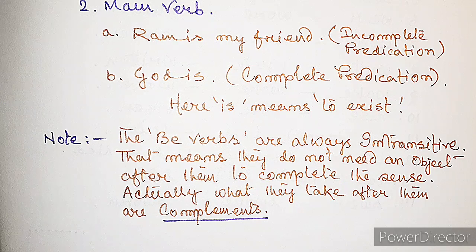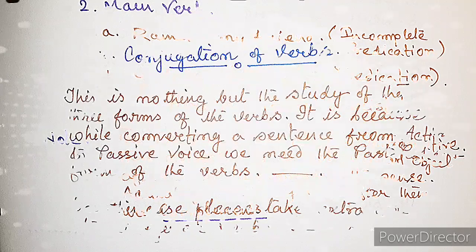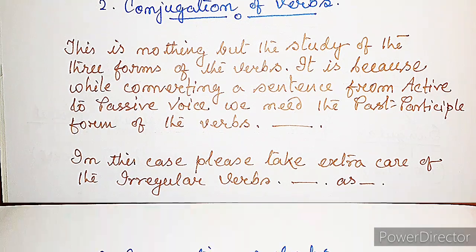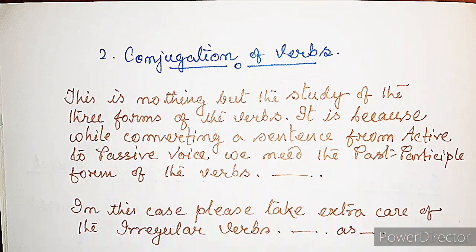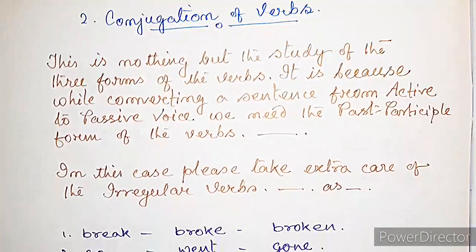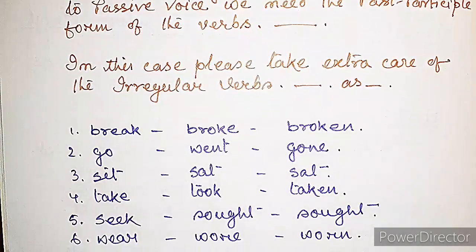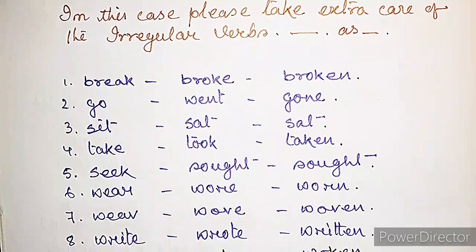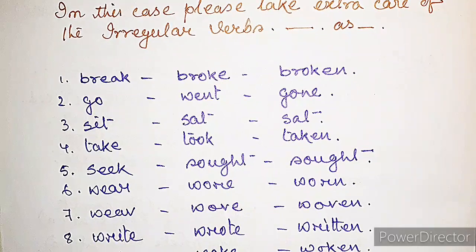The be verbs are always intransitive — they do not need an object after them to complete the sense. What they take after them are complements. Now the conjugation of verbs is the study of the three forms of verbs. While converting a sentence from active to passive we need the past participle form. Please take extra care of irregular verbs — for example: break, broke, broken; go, went, gone; sit, sat, sat; take, took, taken.